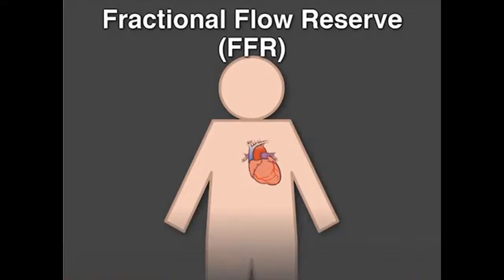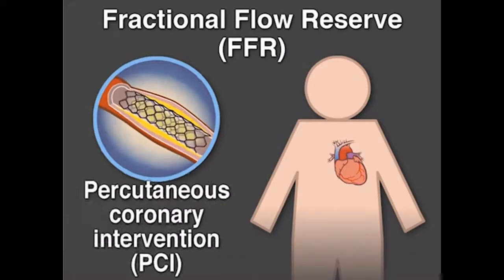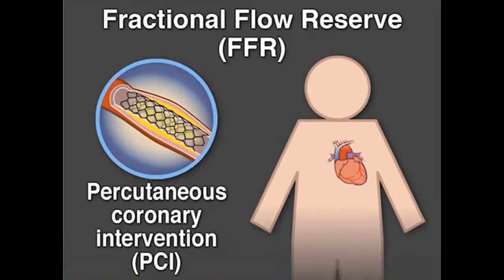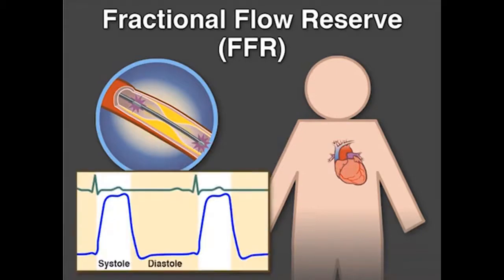Fractional flow reserve, or FFR, is a technique for assessing the severity of a coronary artery stenosis in preparation for possible PCI of the lesion. FFR uses a pressure wire passed across the stenotic lesion and measures the mean pressure both proximal and distal to the stenosis during the entire cardiac cycle.